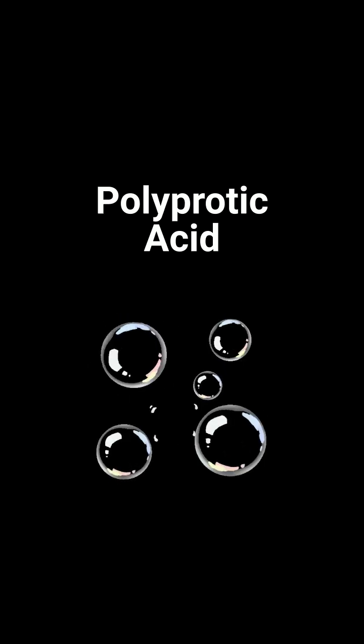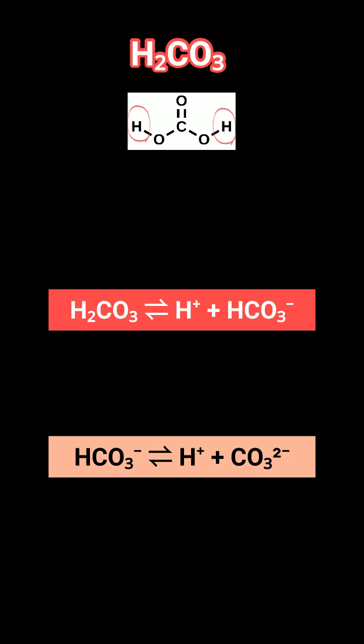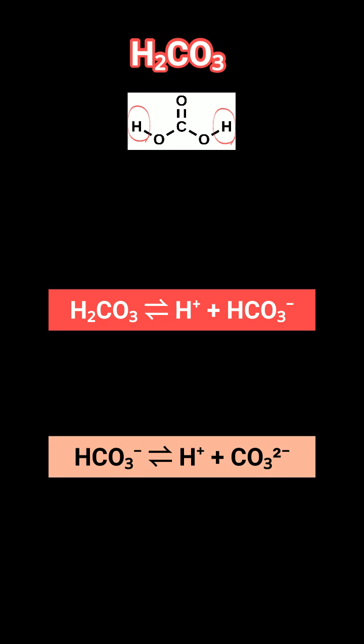A great example is carbonic acid, written H2CO3. It has two acidic protons, meaning two dissociation steps, and two pKa values.